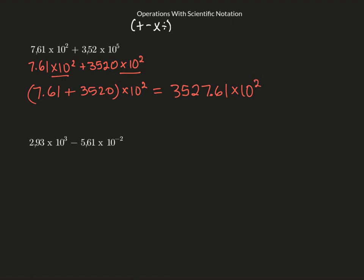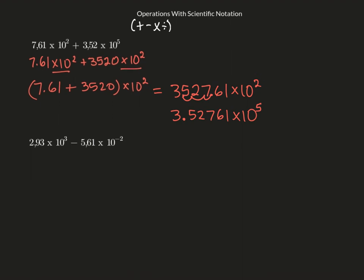Now I've got to put it back into scientific notation. I move the decimal three places back, adding 3 to the exponent, giving 3.52761 times 10 to the fifth. Alternatively, I could have changed 7.61 times 10 to the second to 0.00761 times 10 to the fifth, and then added it to 3.52 times 10 to the fifth. Either approach gives the same result — both methods are valid.